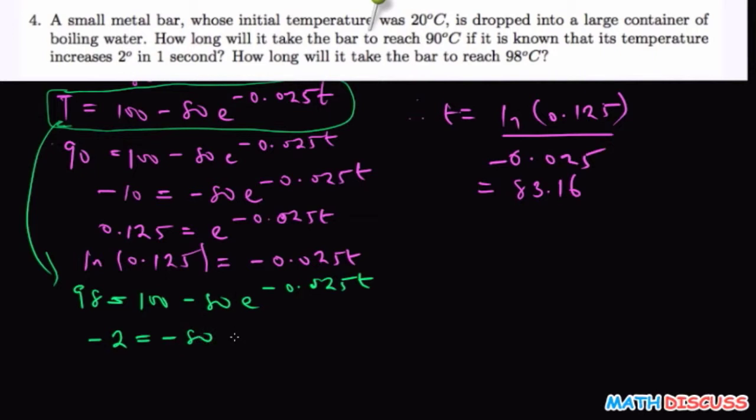equals minus 80 e to the power negative 0.025t. So to find t we first divide both sides by negative 80. So when you divide both sides by negative 80, this one goes off, and what you then have is going to be